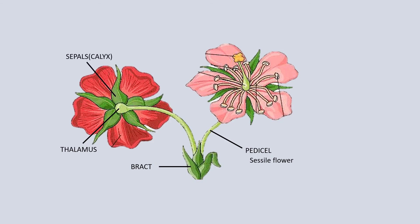Calyx: It is the outermost accessory whorl of the flower and it is made up of sepals. The sepals give protection to the inner parts of the flower during bud condition. Corolla: It is the second whorl of the flower and consists of petals which are variously colored. Corolla helps in pollination by insects.